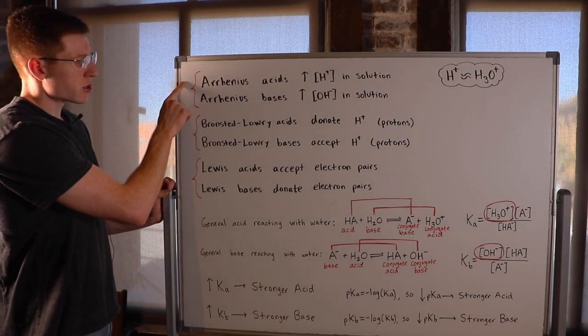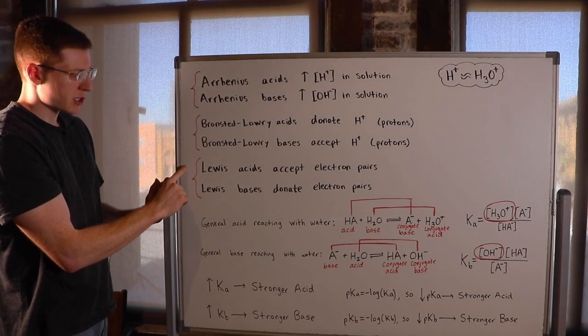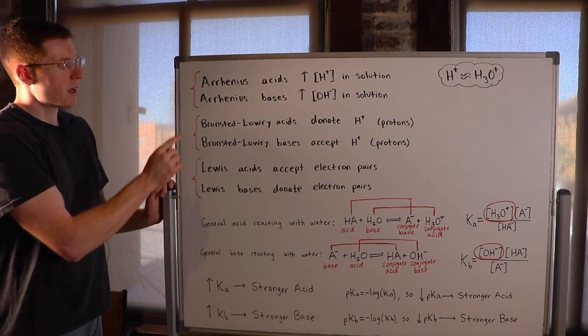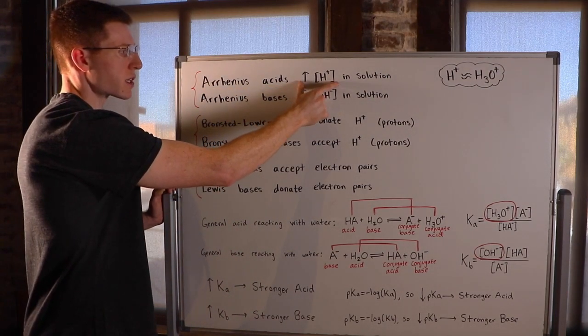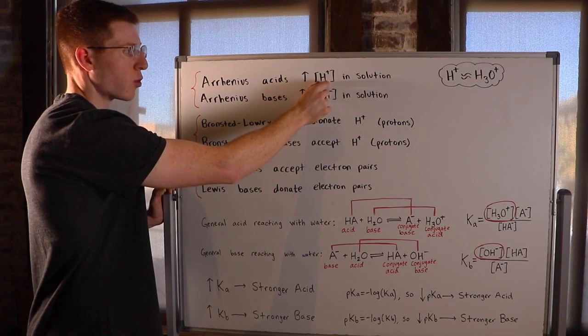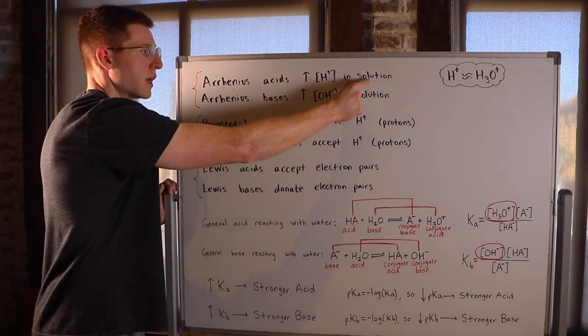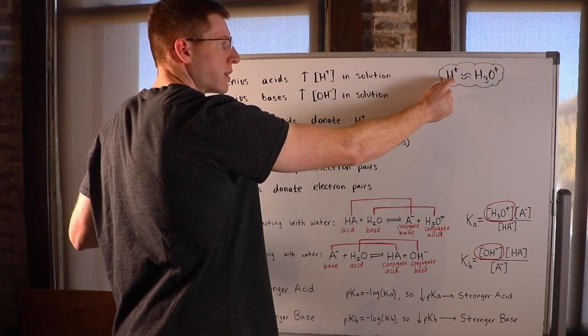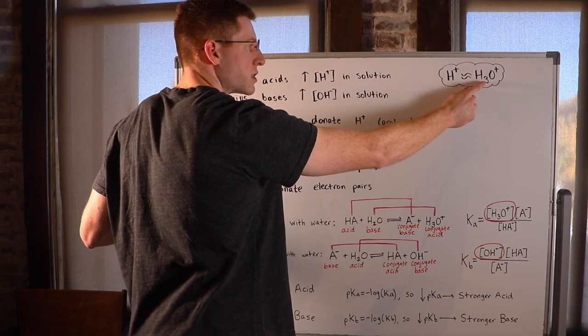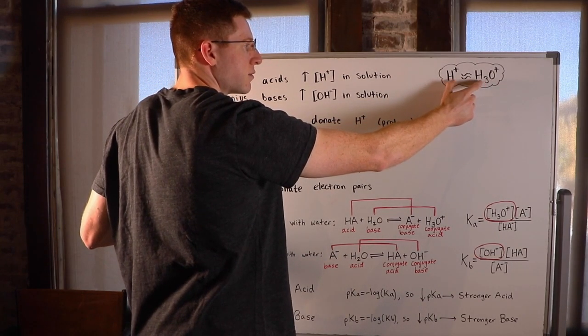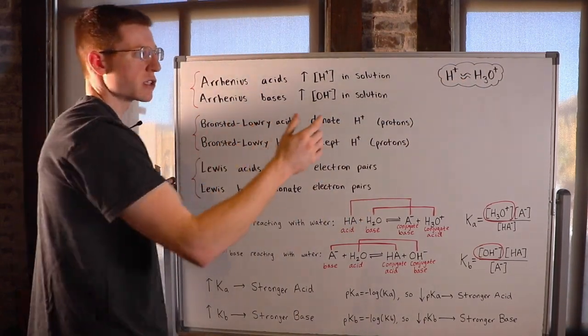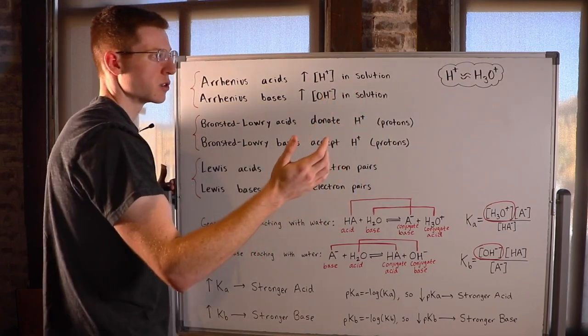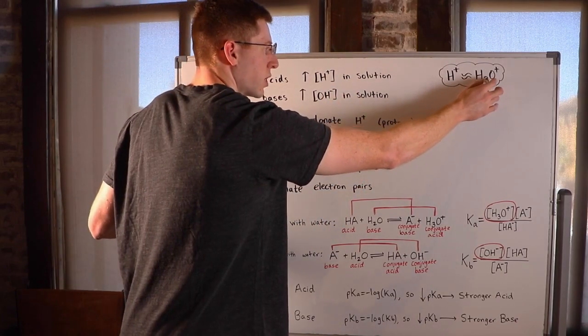The first thing I want to draw your attention to are the three definitions of acids and bases. The first is the Arrhenius definition. An Arrhenius acid increases the concentration of H+, or protons, in solution. And in General Chemistry 2, you want to think about H+ as pretty much the same thing as H3O+. They really do the same thing in solution, but H+ is more of an idea. We don't actually see H+ by itself in a solution. It's really in this form, H3O+.